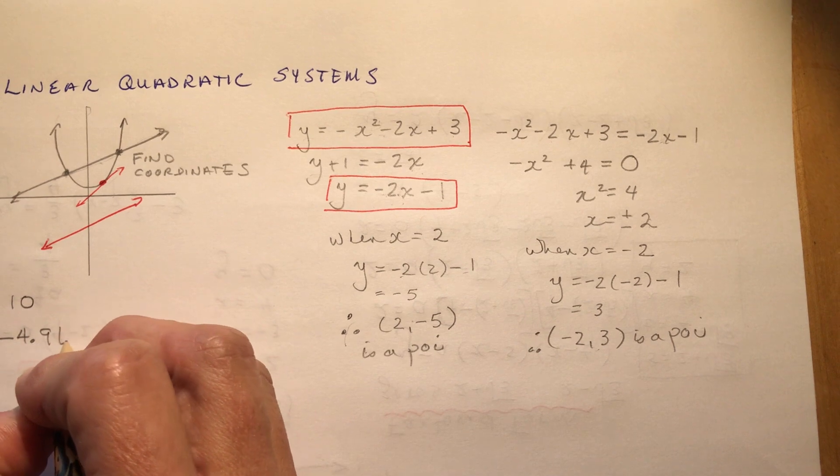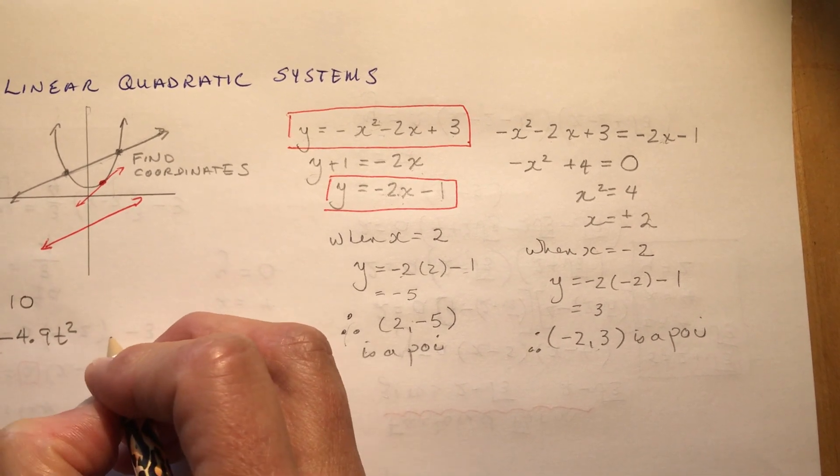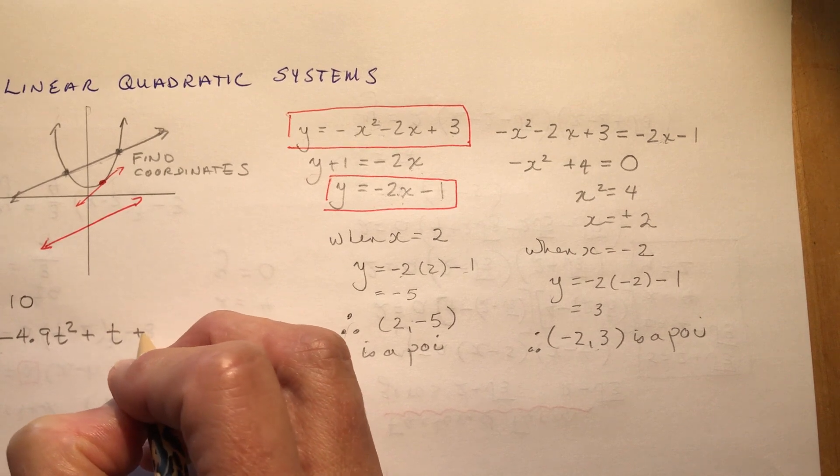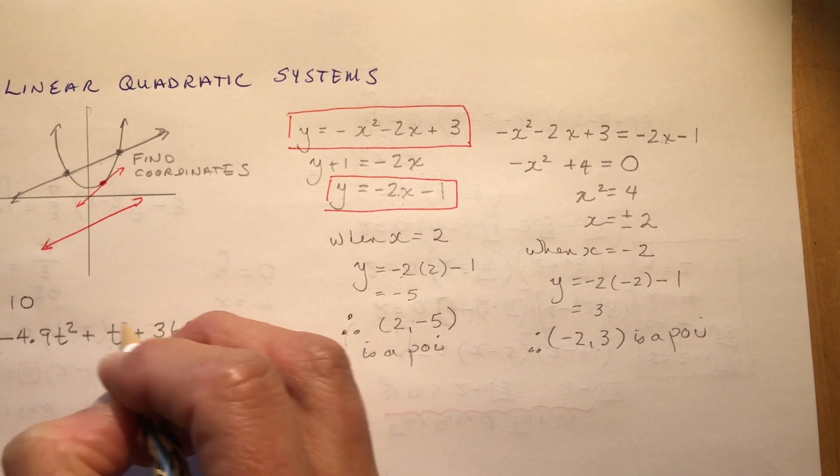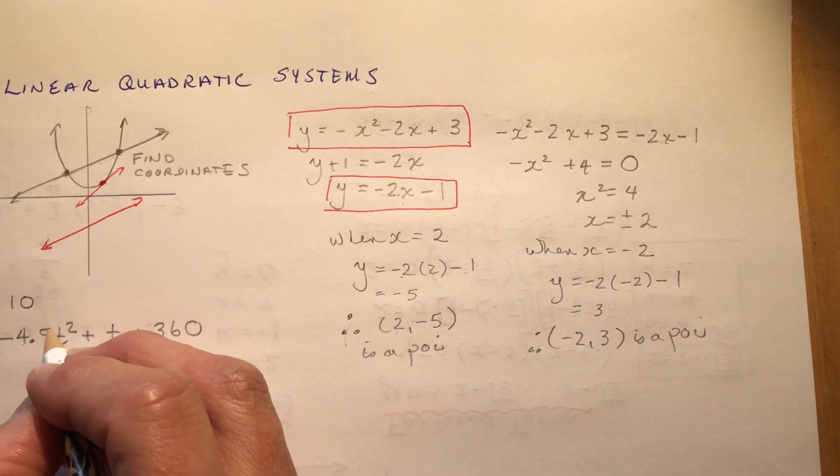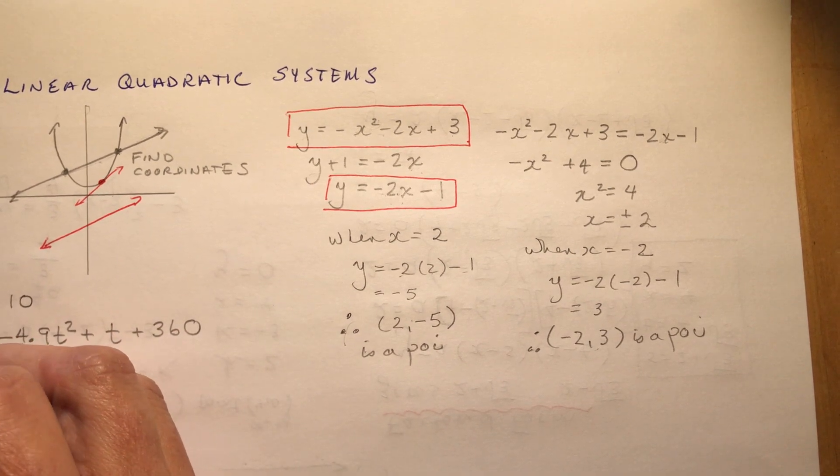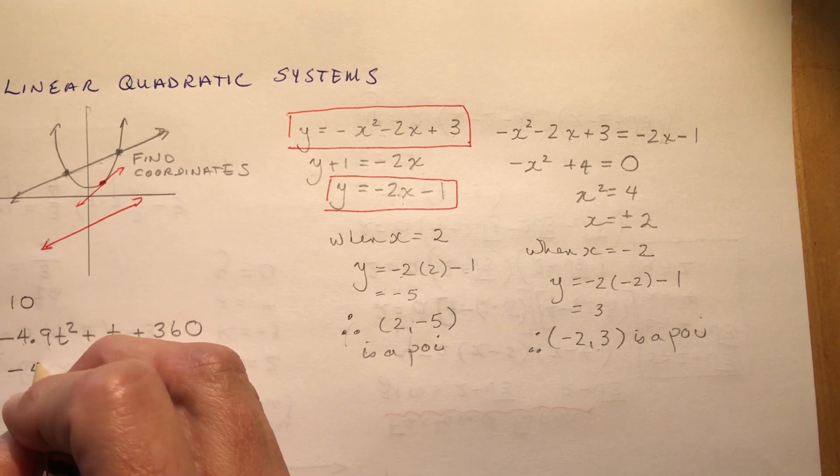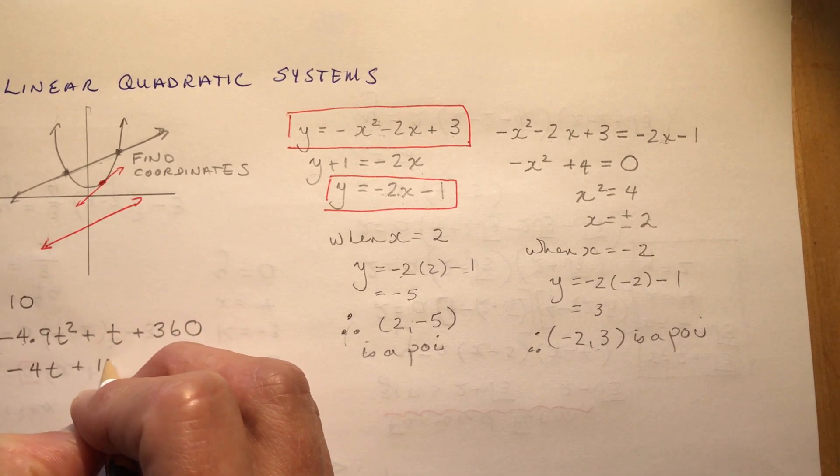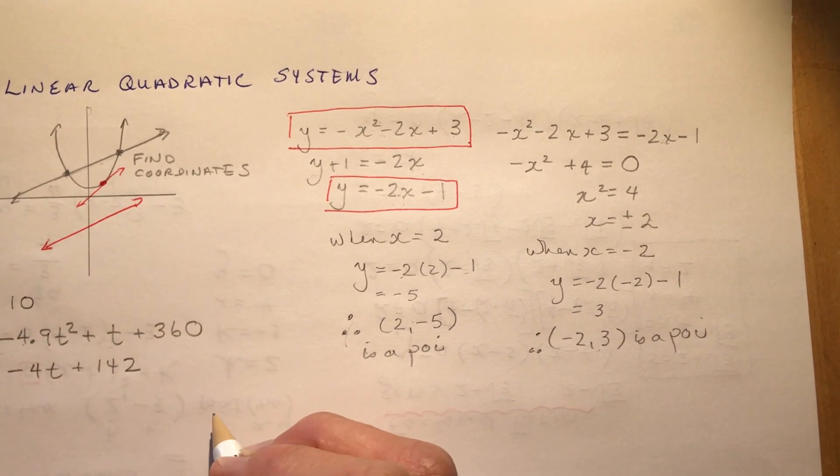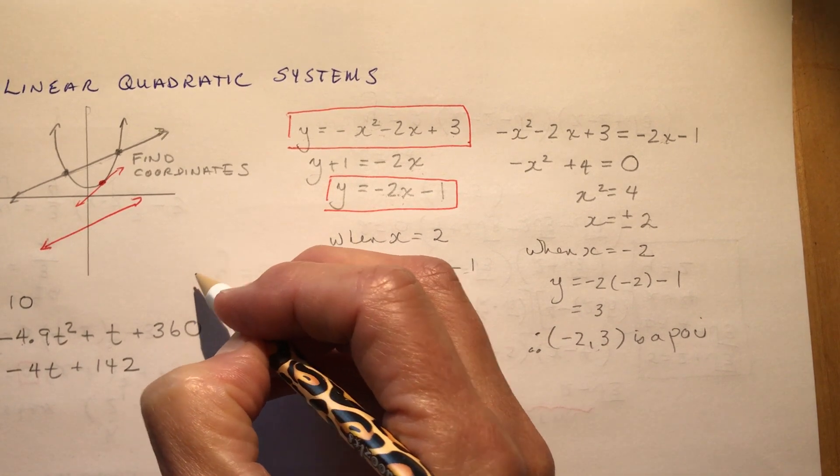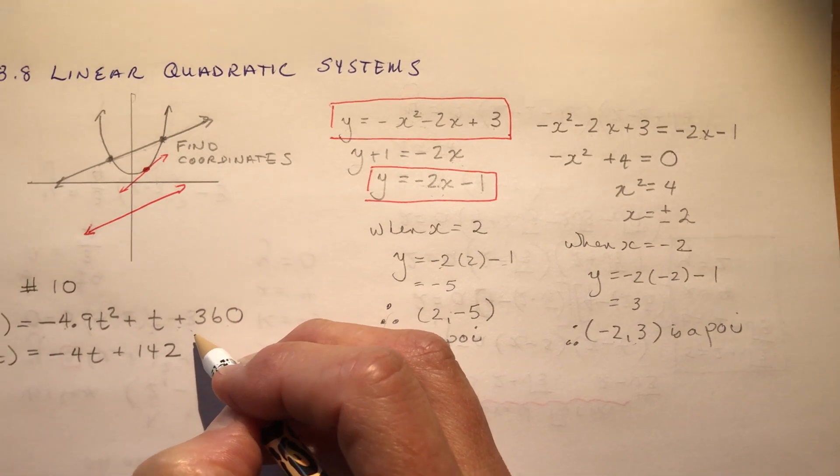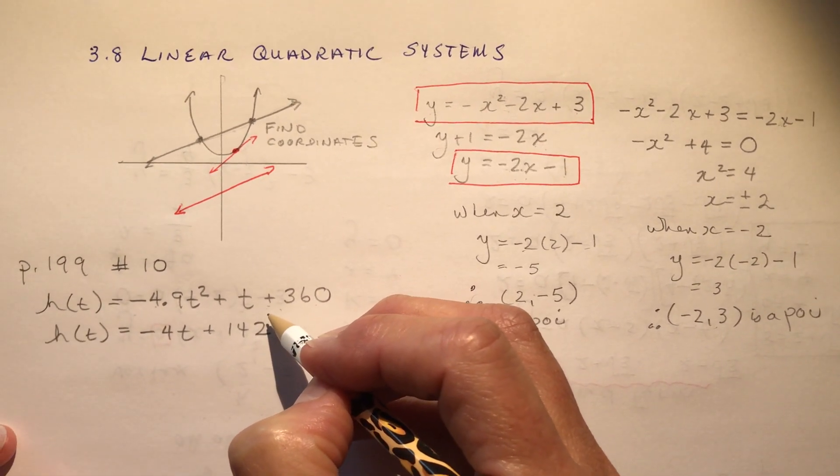So 4.9 t squared. You do recognize that that's acceleration due to gravity. Maybe you did that in another course. Because 2 times that would be minus 9.8. You'll do that a lot when you do calculus. Okay, so I have minus 4t plus 142. So you have some sort of concave down parabola. The height, the initial height, he started at 360 meters.